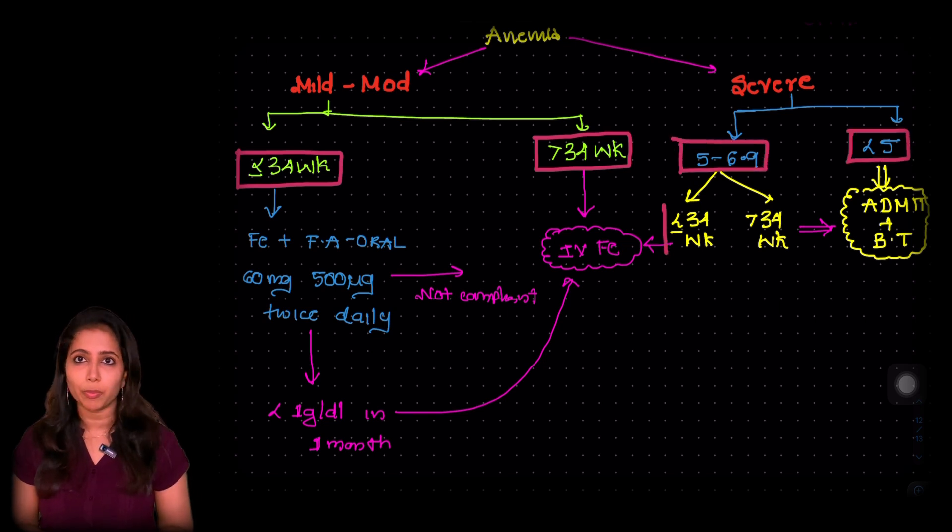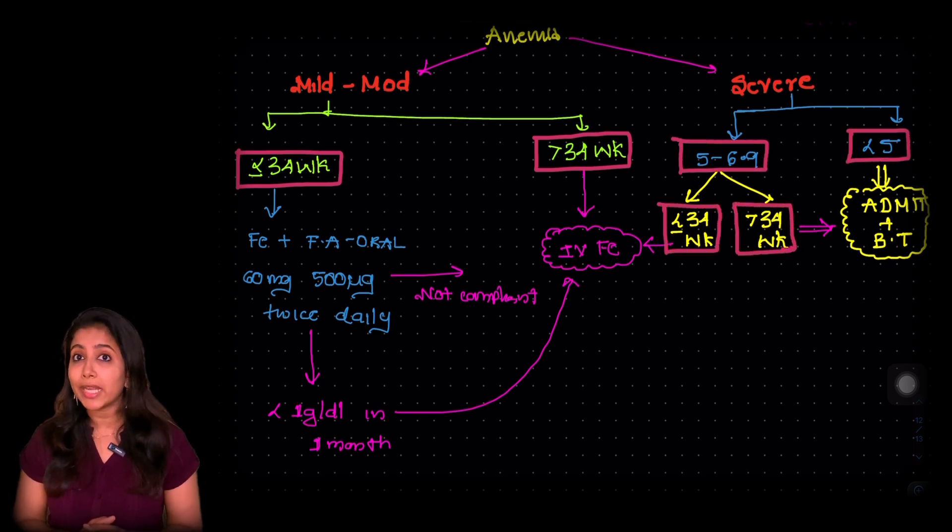Few more things to note in this topic is the dose of prophylactic iron that is routinely given for pregnant woman is 60 milligram elemental iron and 500 microgram of folic acid which is given daily for this woman.